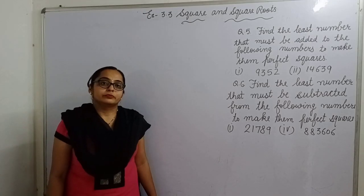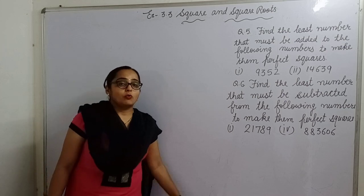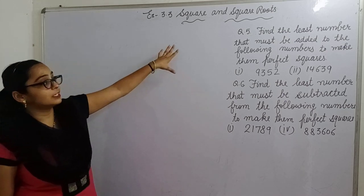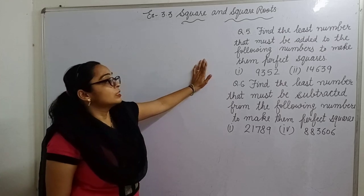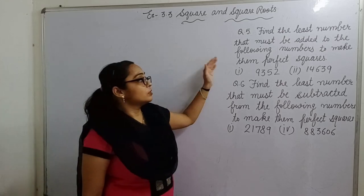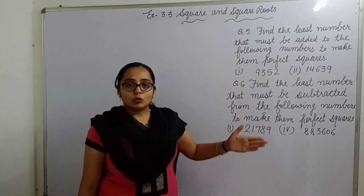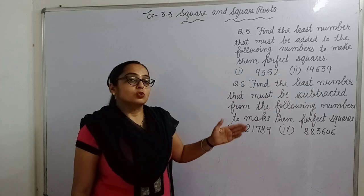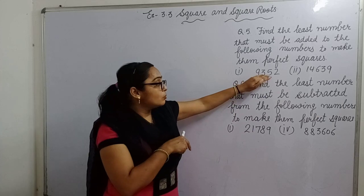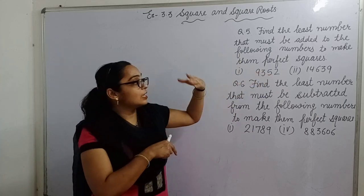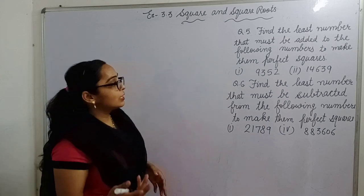Hello students. Now let's move to the next question of exercise 3.3, that is the 5th question. In this question, we have to find out the least number that must be added to the following numbers to make perfect squares. These are not perfect square numbers, so we have to find out what number must be added to make a perfect square number.